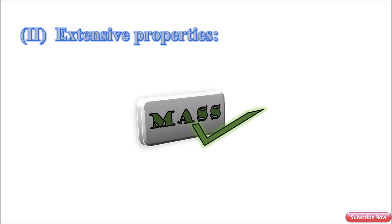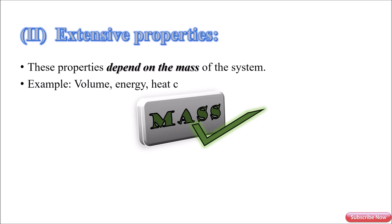Next is extensive properties. These properties depend on the mass of the system. For example, volume, energy, heat capacity, enthalpy, etc.